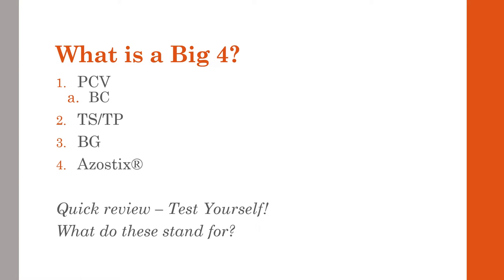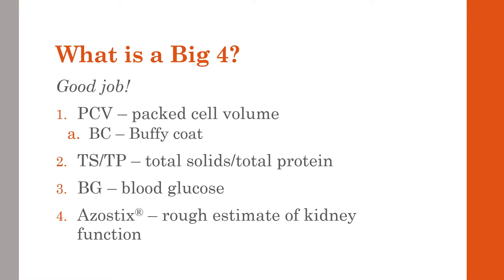Hopefully you had time to write down a couple. Let's take a look. PCV is packed cell volume. BC is Buffy coat. Total solids and total protein are two terms you'll see used interchangeably throughout your time in veterinary medicine — total protein is when we're looking at plasma under the refractometer, and total solids is when we're looking at serum. BG stands for blood glucose. And azostix — probably never heard of that one — gives us a rough estimate of how the kidneys are functioning. It's not a great test, but it tells us we need to do more investigation if we get a special result.